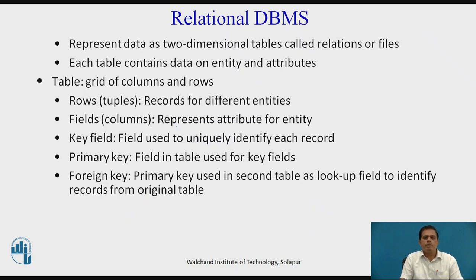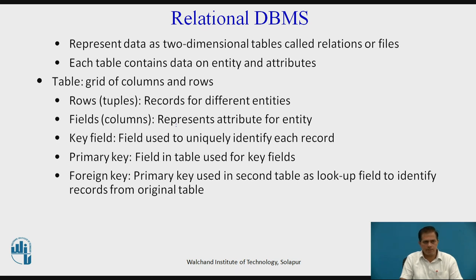Now we look at the relational database management system. It represents data as two-dimensional tables called relations or files. Each table contains data on entities and attributes. A table is a grid of columns and rows — rows are called tuples, which contain records for different entities; columns represent attributes. A key field uniquely identifies each record. The primary key is a field in a table with unique values, while a foreign key is a primary key used in a second table as a lookup field to identify records from the original table.